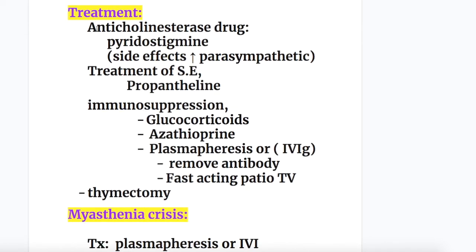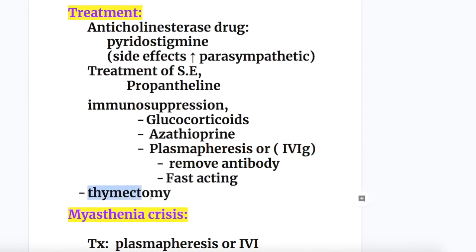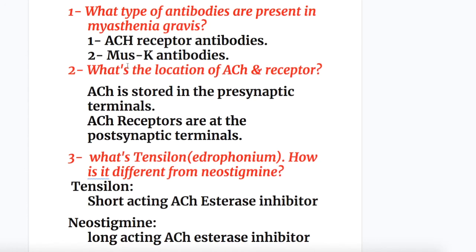Treatment may be medical or surgical. Medical treatment includes anti-cholinesterase drugs such as pyridostigmine, though the side effect is increased parasympathetic activity. Immunosuppression with glucocorticoids, azathioprine, plasmapheresis, or IV immunoglobulins can remove the antibodies and are fast-acting. Surgical treatment is thymectomy. Treatment of myasthenic crisis is plasmapheresis or IV immunoglobulin.